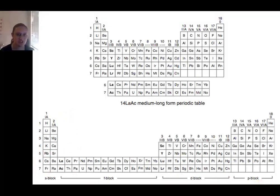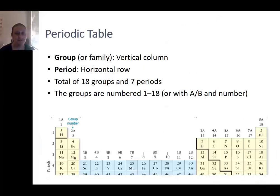The columns of the periodic table are referred to as groups or sometimes families, and the rows are often referred to as periods. The modern periodic table has a total of 18 groups, which are the columns as we go across, and seven periods, which are the rows as we go down.